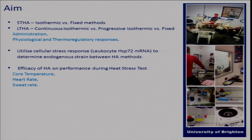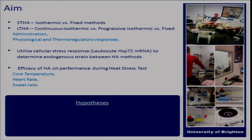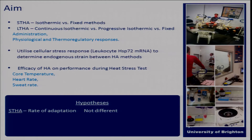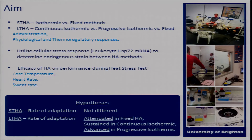Brief hypotheses were that the rate of adaptation over a short-term heat acclimation period wouldn't be different. As we extended towards long-term heat acclimation, we'd see the rate of adaptation attenuating in the fixed model, sustained in a continuous isothermic, and potentially advanced in a progressive isothermic model.